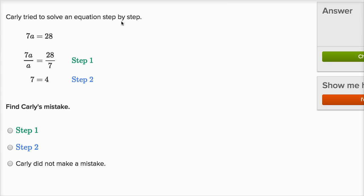Carly tried to solve an equation step by step. They tell us, we see how she tried to solve the equation. They say, find Carly's mistake. So let's see what Carly did. She started with seven times a is equal to 28.